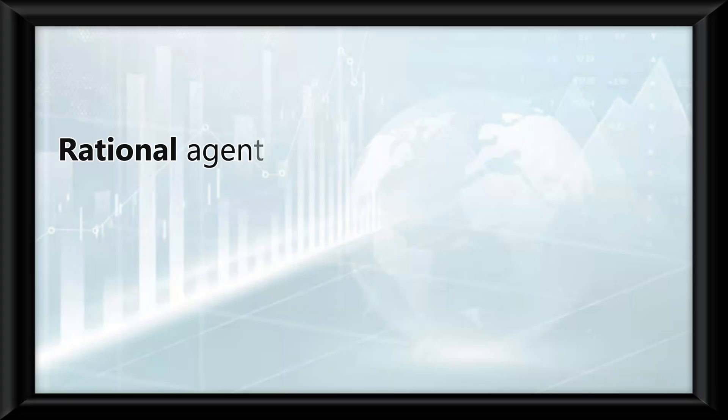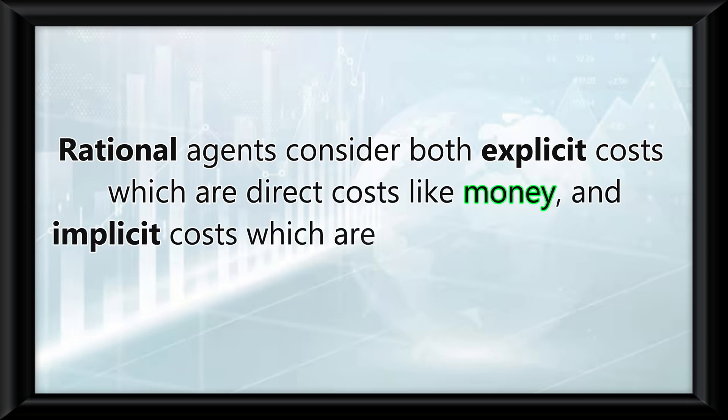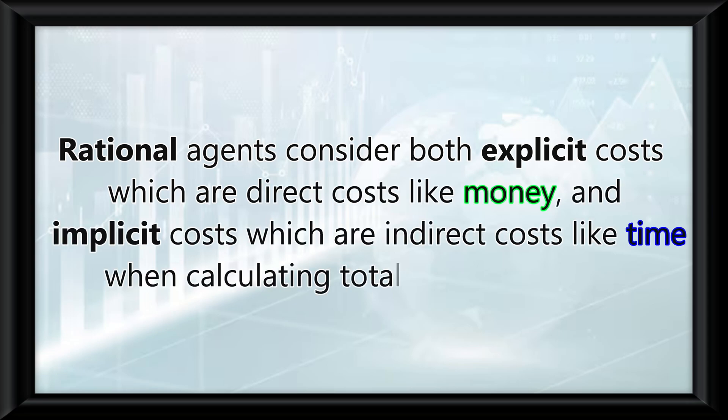Rational agents consider both explicit costs, which are direct costs like money, and implicit costs, which are indirect costs like time, when calculating total economic costs.